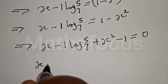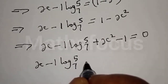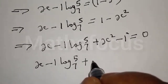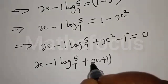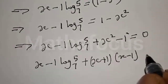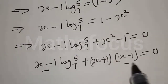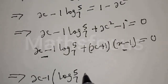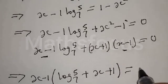We have x minus 1 times log base 7 of 5, plus x squared minus 1. The term x squared minus 1 is a difference of two squares, which can be written as x plus 1 times x minus 1. So we have x minus 1 times the quantity log base 7 of 5 plus x plus 1, equal to 0.